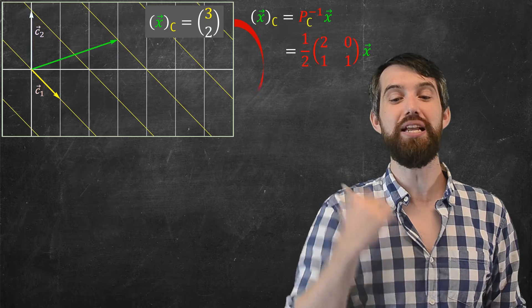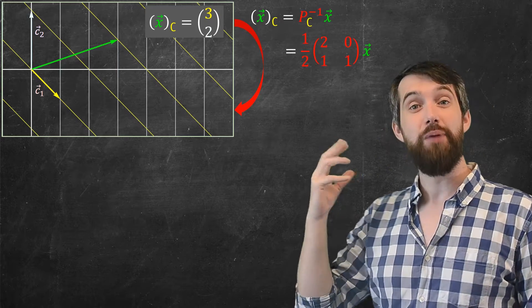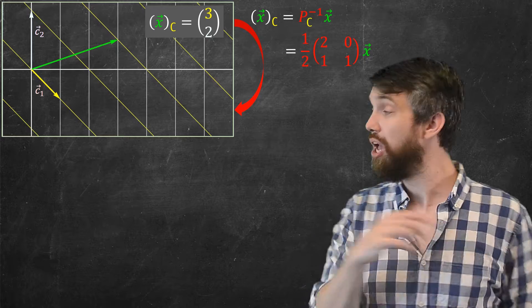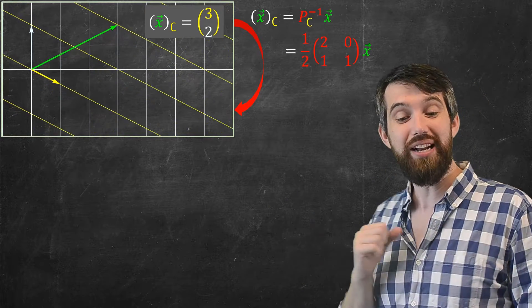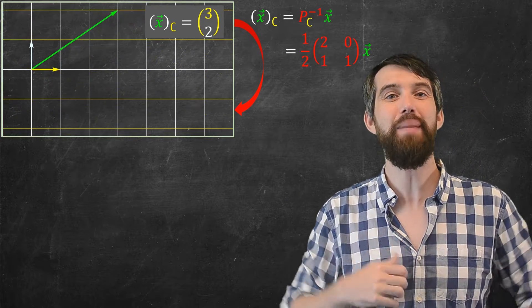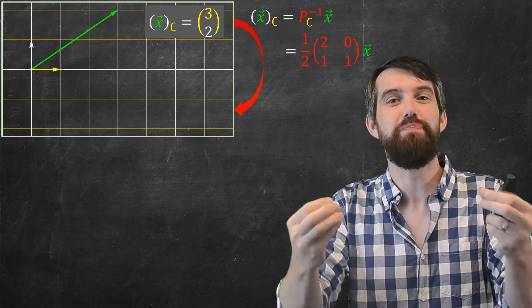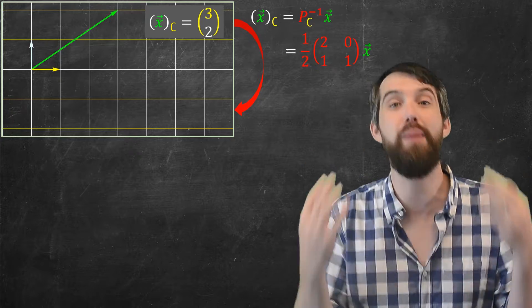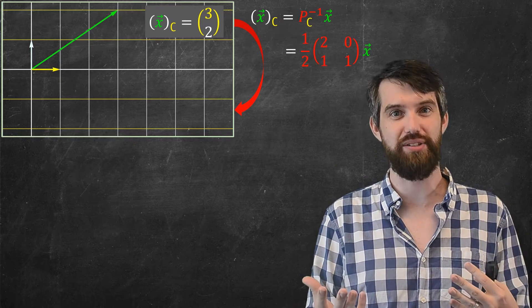And then I can go and I can transform this. I can apply this pc inverse that's going to take it into the c basis. And what does it do? Well, it sort of straightens everything out. It makes it look from the perspective of the c basis the way someone in the c basis would probably have come up with a grid system if they didn't know about the standard system.